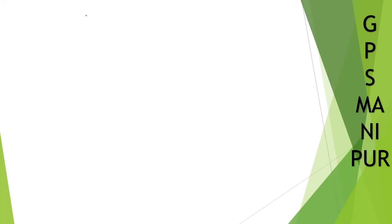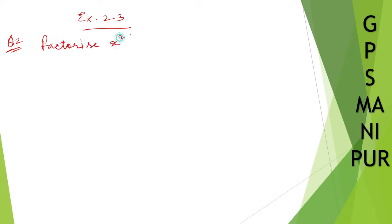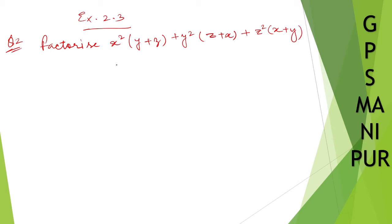Now we are doing exercise 2.3, question number 2. Question number 2 is: factorize x squared y plus zy plus z plus y squared plus y squared z plus x plus z squared plus z squared x plus y plus 2xyz, by using the factor theorem.